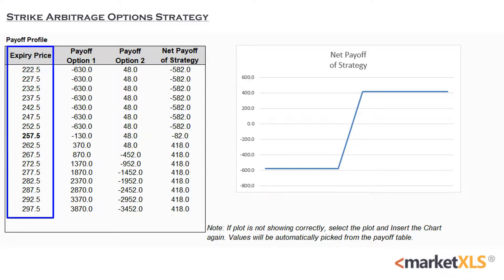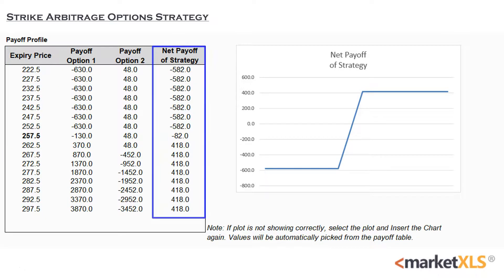As we can see, the gains are maximized when the underlier grows above 262.5 or above on expiration. However, the profit as well as the loss potential both are limited in this strategy.